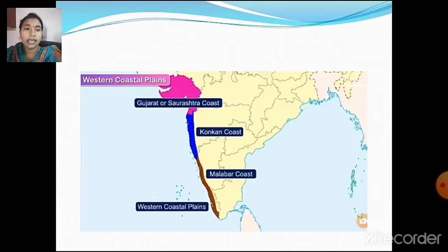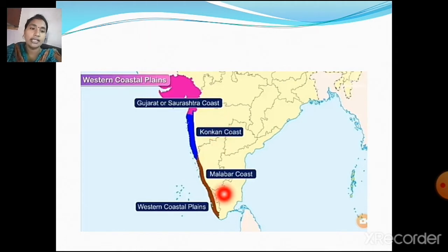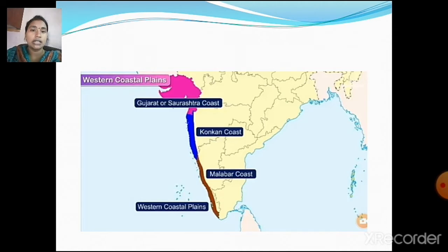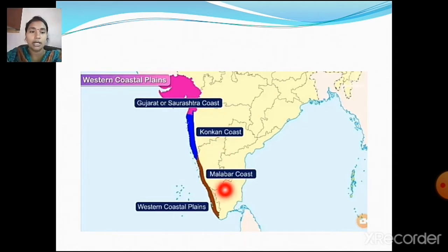The western coastal plain was divided into three parts. Those three parts are the Gujarat or Saurashtra coast, the Konkan coast in the middle, and the Malabar coast which is below the Konkan coast. This western coastal plain ends in the southernmost tip of India, which is Kanyakumari.